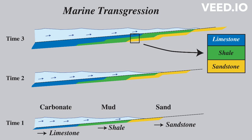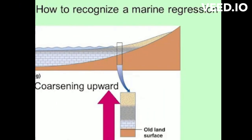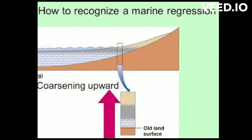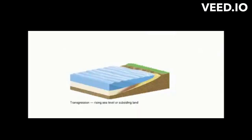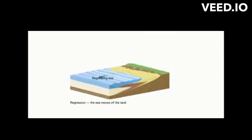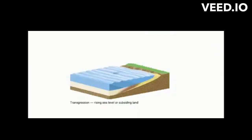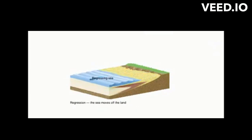A classic example of this law is the vertical stratigraphic succession that typifies marine transgressions and regressions. Facies migrate laterally with changes in sea level. Rising sea level is called transgression.